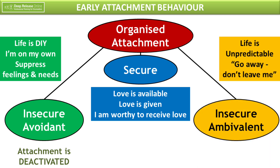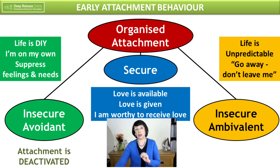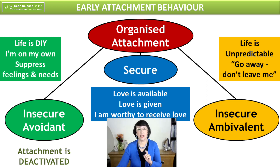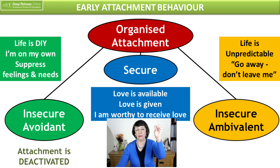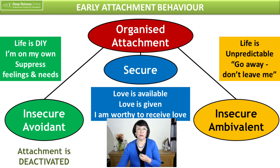We also have insecure ambivalent as the third type of organized attachment, where sometimes your needs get met and sometimes they don't. So it's all about being hypervigilant to see if they're in a good mood or a bad mood — it's all very unpredictable. I put myself in this category: I had a very angry father and a stressed-out mother, and I was always putting the mood thermometer up to see whether it was safe.